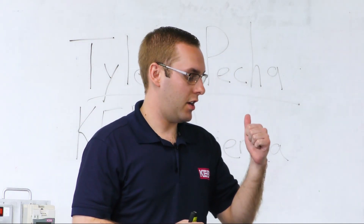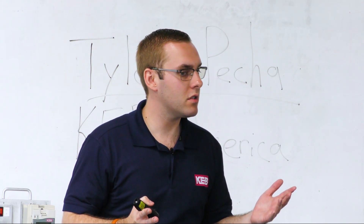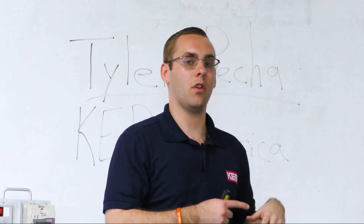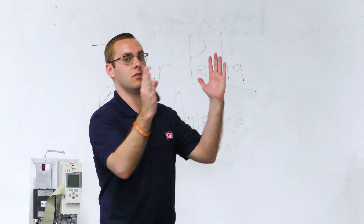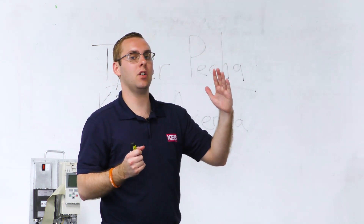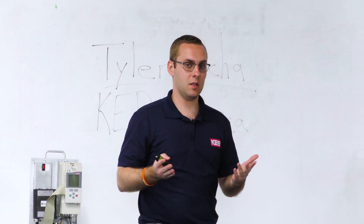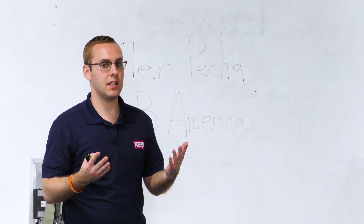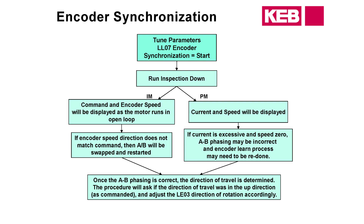You enter different count values into the encoder position parameter, starting in increments of around 4,000 counts — try to run the car, and if it doesn't move, add another 4,000. Start with increments of about 16,000 to get in the right quadrant, then make smaller and smaller adjustments. It's going to take about an hour; it's really a last resort but it is possible. You'll eventually get to a point where the car moves — it's not going to sound pretty and you'll probably draw high current, but at least you'll know you're in the right area.